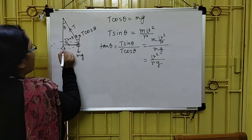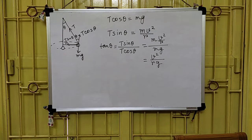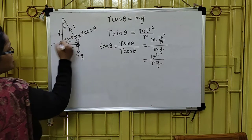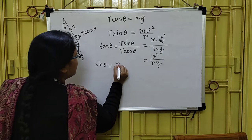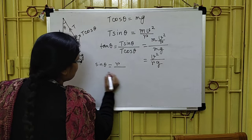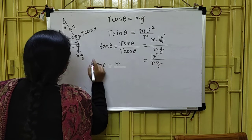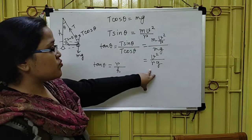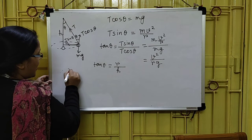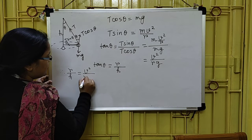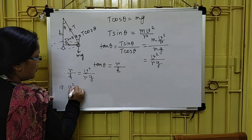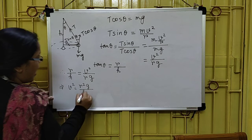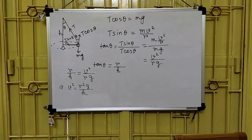If I draw the geometry — the radius of the circular path is R, and the vertical height from the attachment point to the plane of the circle is H. Then tan theta = R / H. Setting R / H equal to v² / Rg, I get v² = R²g / H.